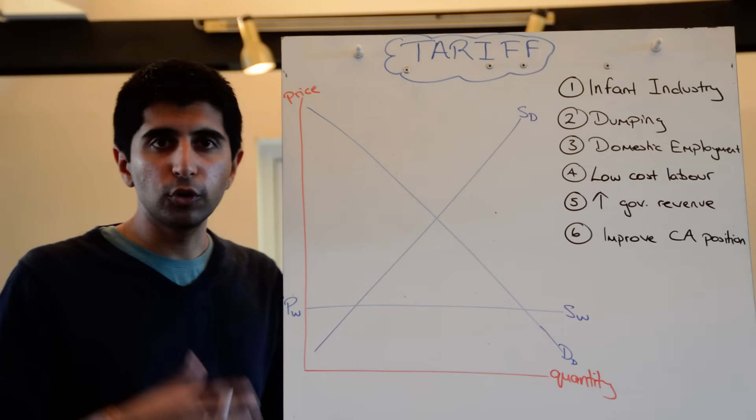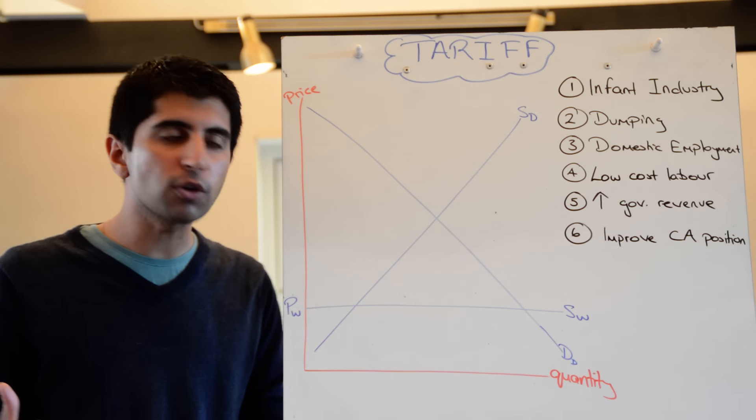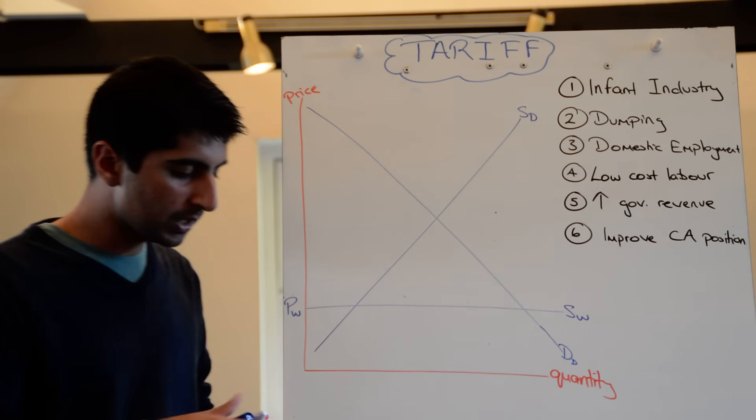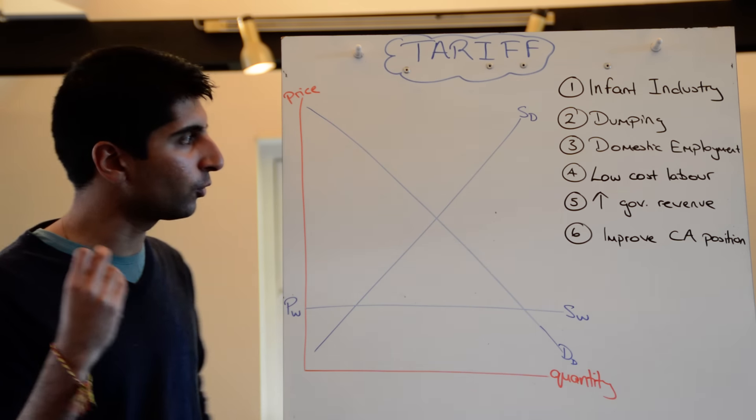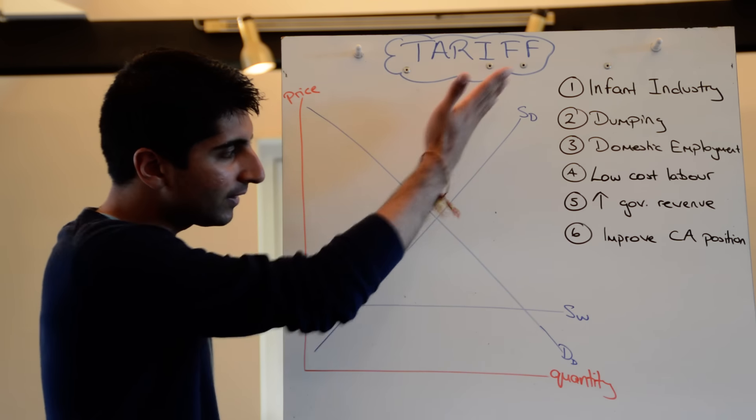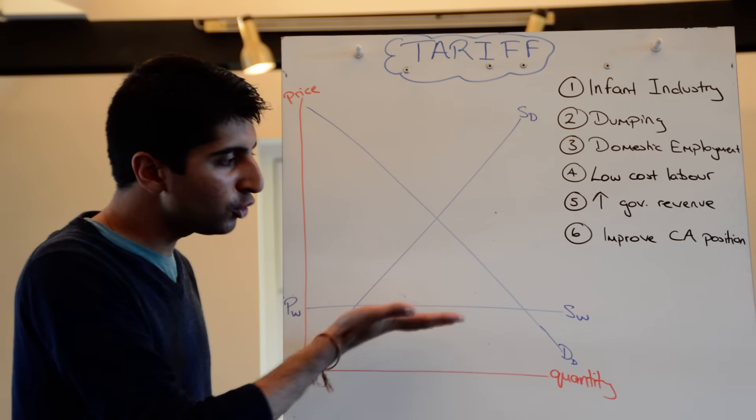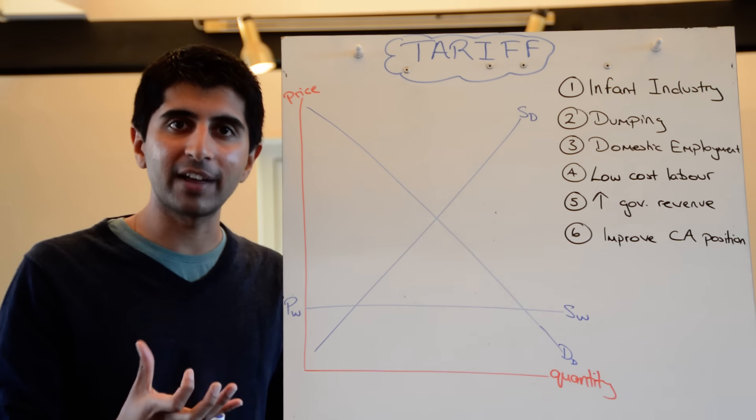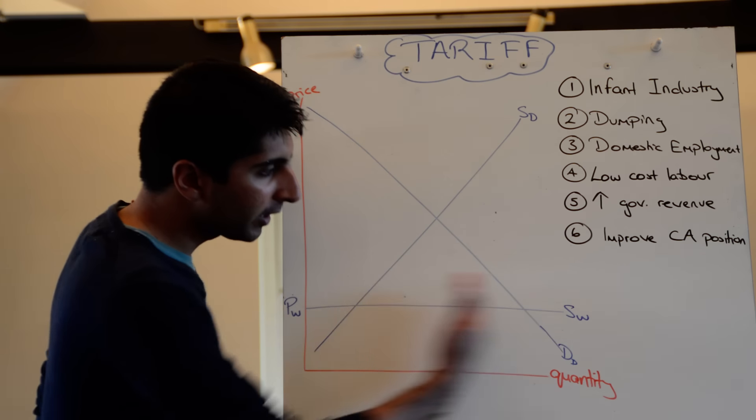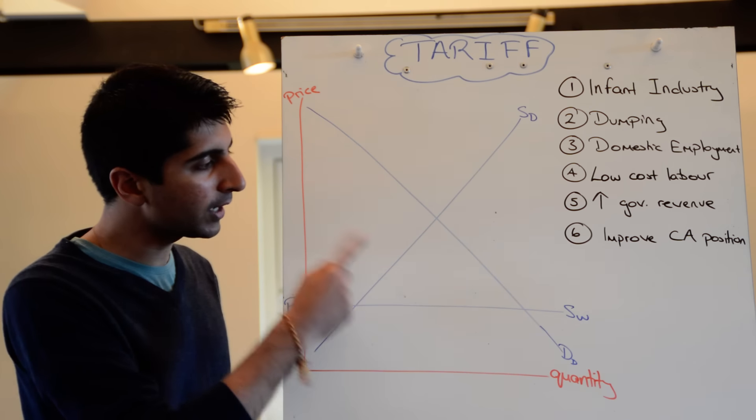What I've drawn here is our normal free trade diagram. I've made a video before about free trade and how we get to this position here. You can see we've got price and quantity, domestic supply, domestic demand, and we're assuming that the world suppliers have got the comparative advantage. So the world supply comes in.